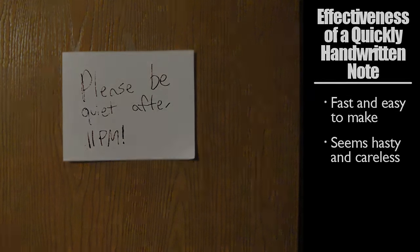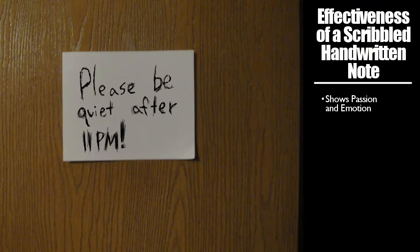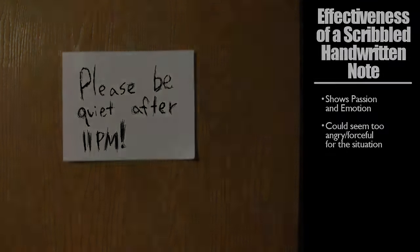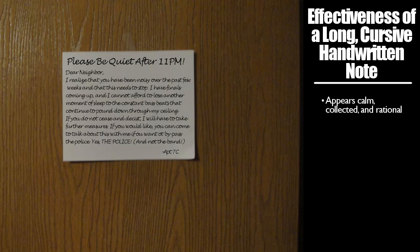So, in order to be more forceful, you might scribble each of the letters to make them look more passionate and bold. But now, you might worry that this note is too angry looking for your purposes. After all, you want to get the point across to your neighbors, but not to make them feel threatened. So, you write the note again, but in a careful, cursive font. And this time, you write a paragraph or two to give the impression that your grievance has been carefully thought out. But stepping back from this note, you realize that it gives the impression that you've put almost too much thought and effort into it, and that perhaps you don't have enough courage to be direct and forceful with your complaint.